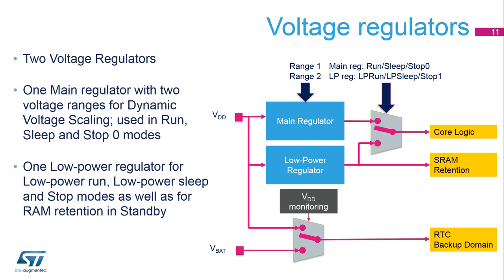Two embedded linear voltage regulators supply all the digital circuitries, except for the standby circuitry and the backup domain. The regulator output voltage, V-Core, can be programmed by software to two different values depending on performance and power consumption requirements. This is called dynamic voltage scaling. Depending on the application mode, V-Core is provided either by the main voltage regulator for run, sleep, and stop zero modes, or by the low-power regulator for low-power run, low-power sleep, and stop one modes. The regulators are off in standby and shutdown mode.